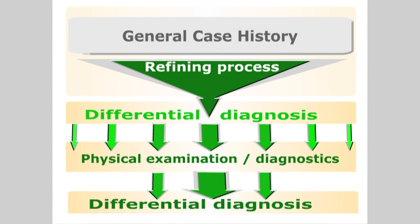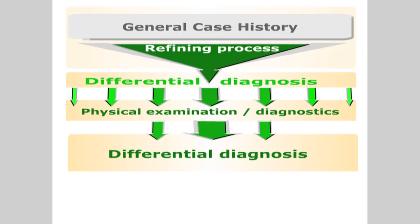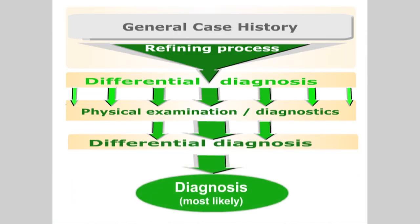A good differential diagnosis should contain only those pathologies justified by the facts. Bear in mind that a patient could have more than one pathology at any one time. Further consideration of the facts gathered so far, or results from investigations, should help you reduce the differential diagnosis list. You have now arrived at the most likely condition or working diagnosis to which treatment may be directed.